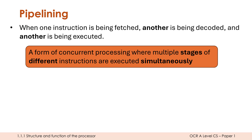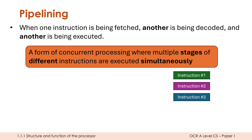That definition might make it sound like parallel processing, but pipelining isn't quite the same. True parallel processing is when multiple instructions are executed at exactly the same time — for example, with multiple cores each executing an instruction simultaneously. In parallel processing, all three instructions are fetched, decoded, and executed together. Pipelining isn't that. That's why the definition uses the word 'concurrent' rather than 'parallel'. Concurrency is broader — parallel processing is one example of it, but not all concurrent processing is parallel.